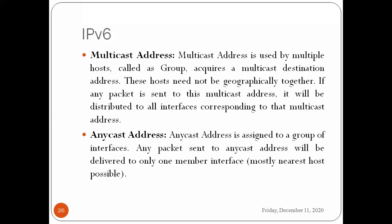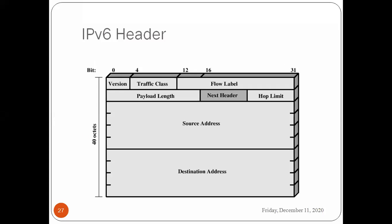Anycast is the third addressing method. An anycast address is assigned to a group of interfaces. A packet sent to an anycast address is delivered to only one member of that group — specifically the one that is nearest to the sender. So: unicast is one-to-one, multicast is many-to-many, and anycast is many-to-one (nearest).